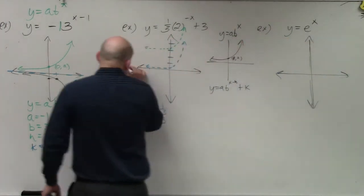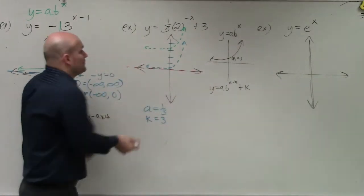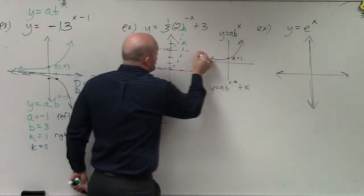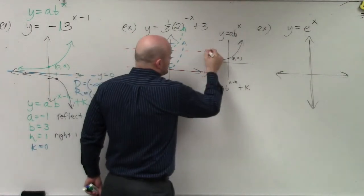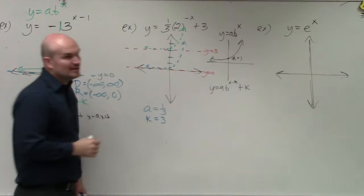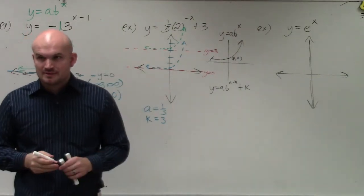There is an asymptote right here. So if you shift the graph up 3, there's now an asymptote at 3. So if it was originally at y equals 0, now it's at y equals 3. Does that make sense?